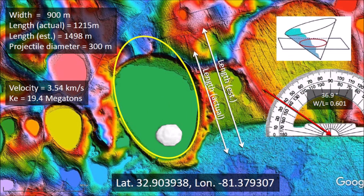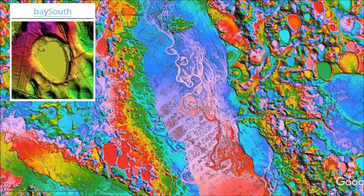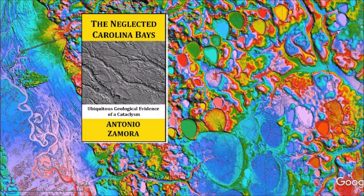Assuming that the launch speed is equal to the impact velocity, an ice projectile with a diameter of 300 meters would have a kinetic energy equivalent to 19.4 megatons of TNT. The Savannah River separates Georgia on the left from South Carolina on the right. These Carolina Bays with the flat tops are characterized by Michael Davias as the Bay South archetype template, and they are very common on hilly terrain. I will continue to examine the Carolina Bays one bay at a time. Please subscribe to be notified of future videos about the Carolina Bays.